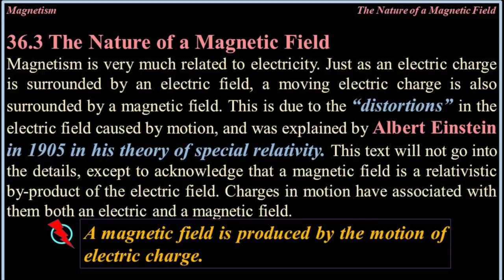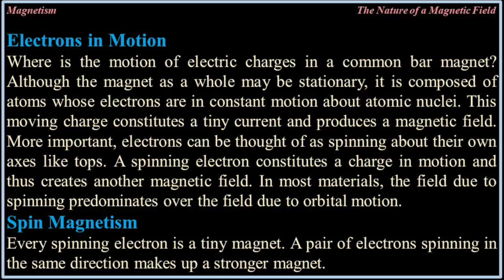Charges in motion have associated with them both an electric and a magnetic field. A magnetic field is produced by the motion of electric charge. Where is the motion of electric charges in a common bar magnet? Although the magnet as a whole may be stationary, it is composed of atoms whose electrons are in constant motion about atomic nuclei. This moving charge constitutes a tiny current and produces a magnetic field. Electrons can be thought of as spinning about their own axis like tops. A spinning electron constitutes a charge in motion and thus creates another magnetic field.